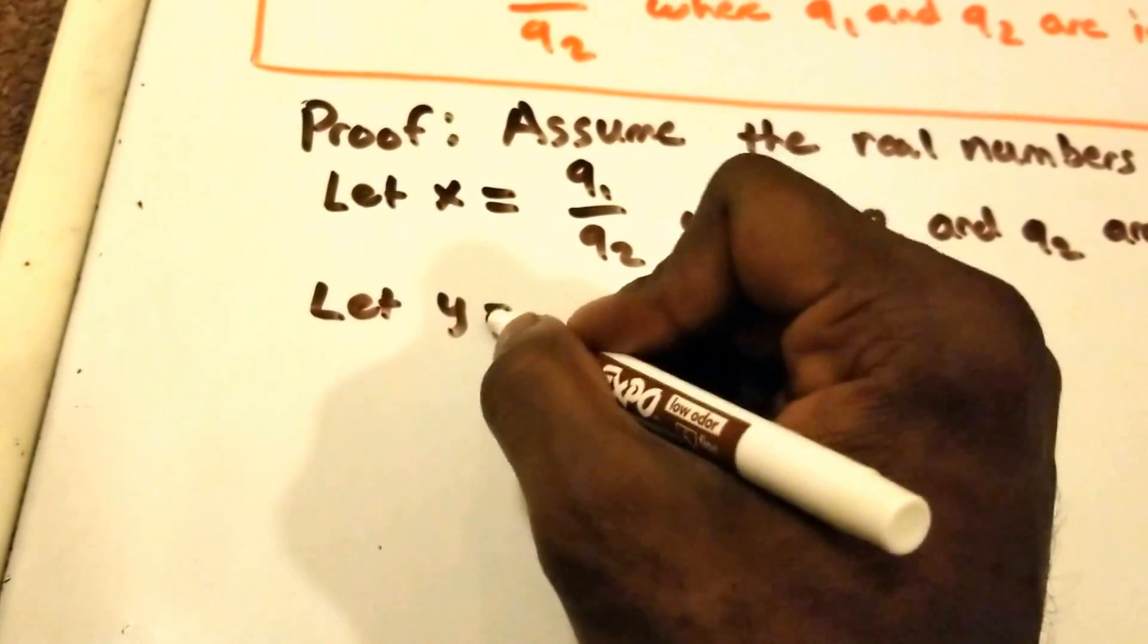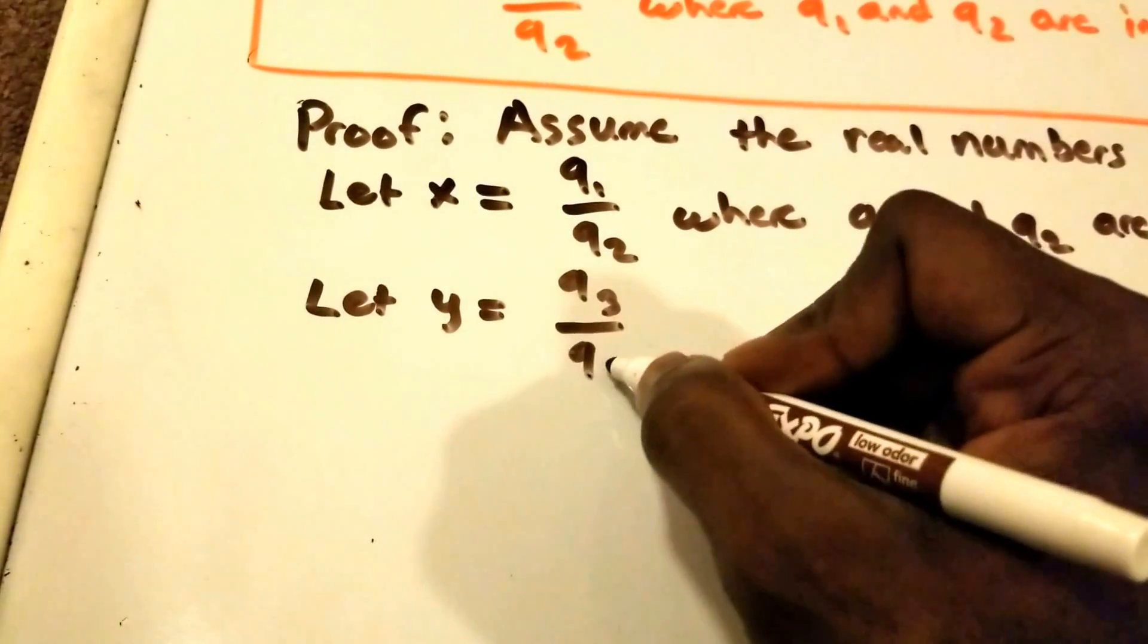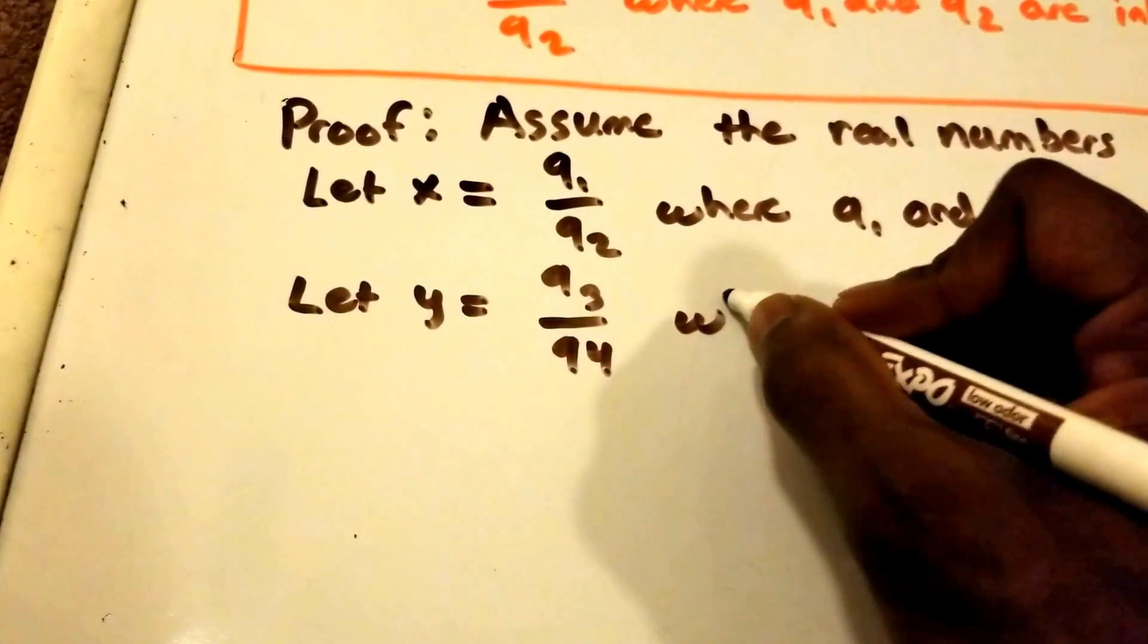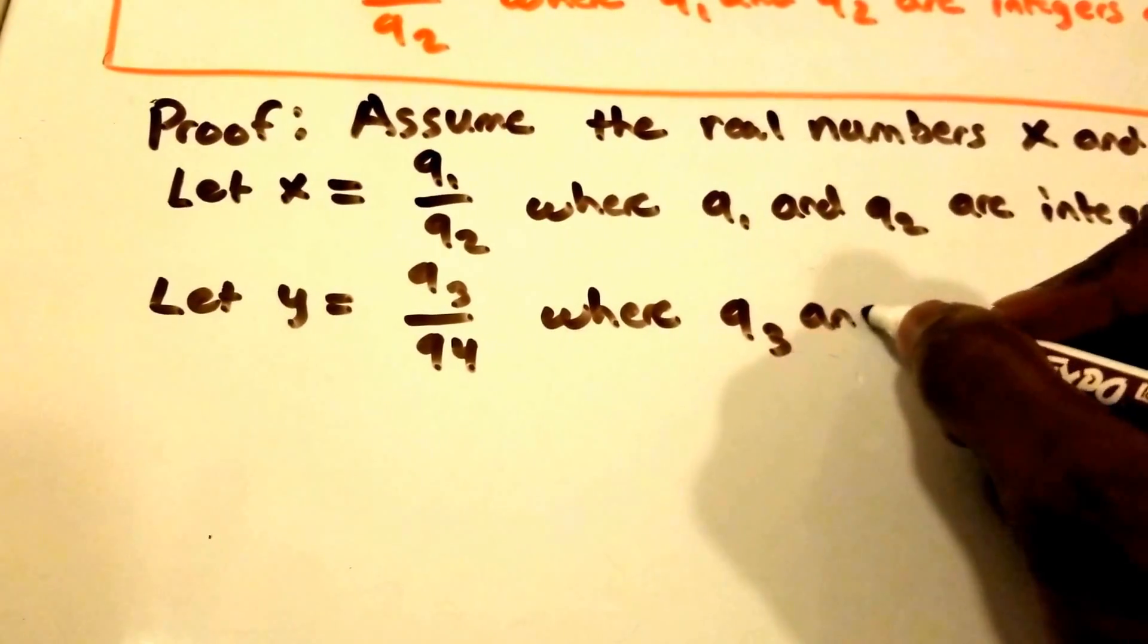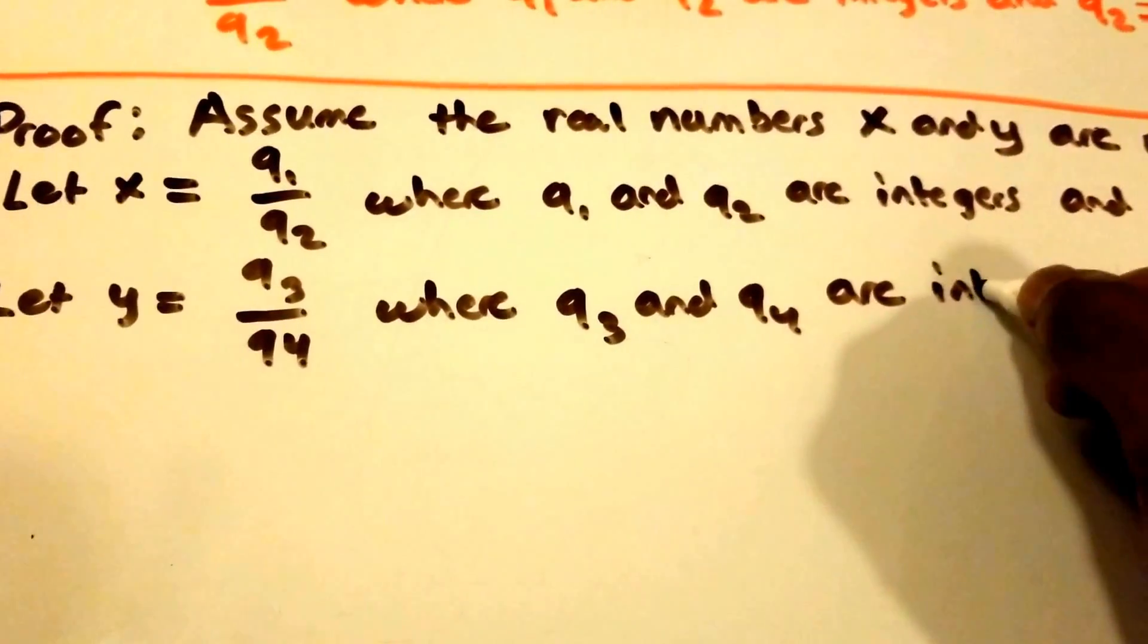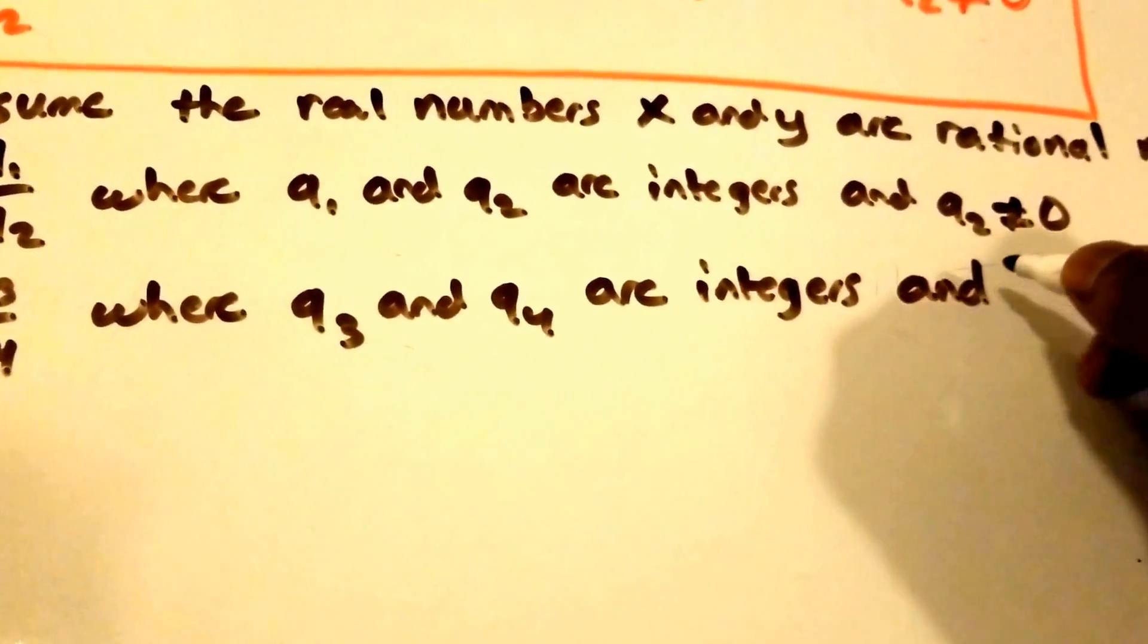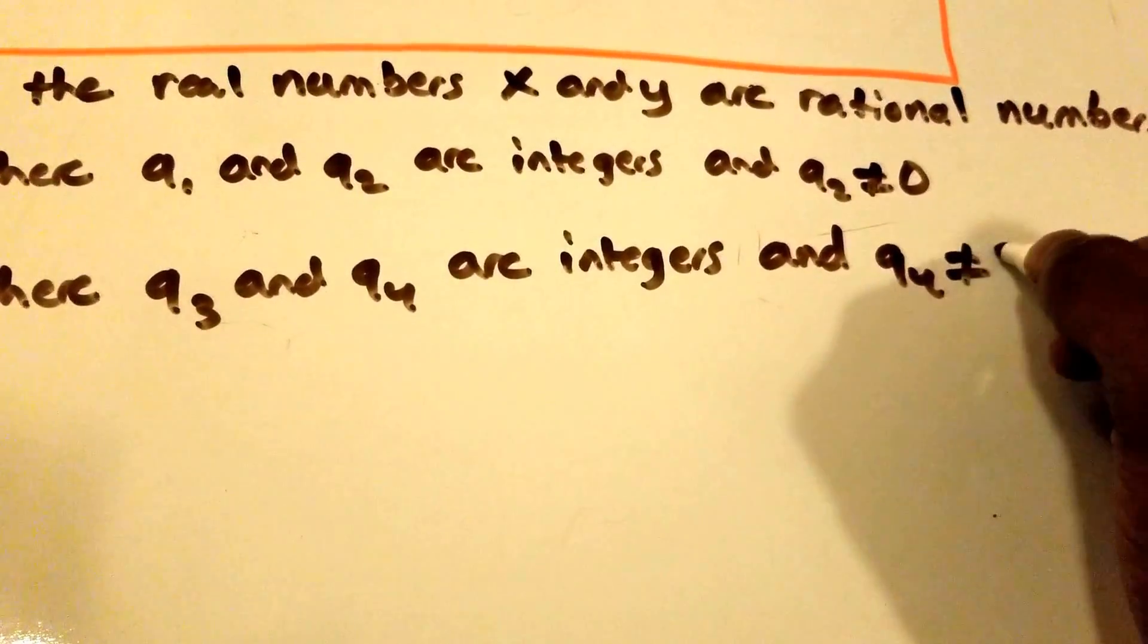And then we're going to let y equal q subscript 3 divided by q subscript 4, where q3 and q4 are integers and q4 does not equal 0. Again, we cannot divide by 0.